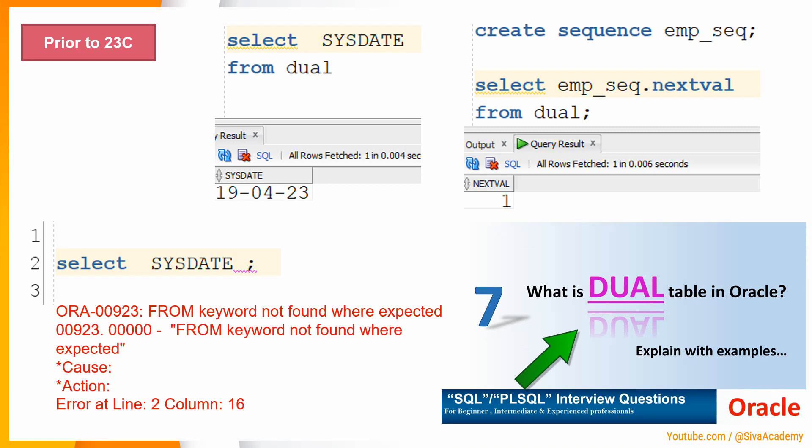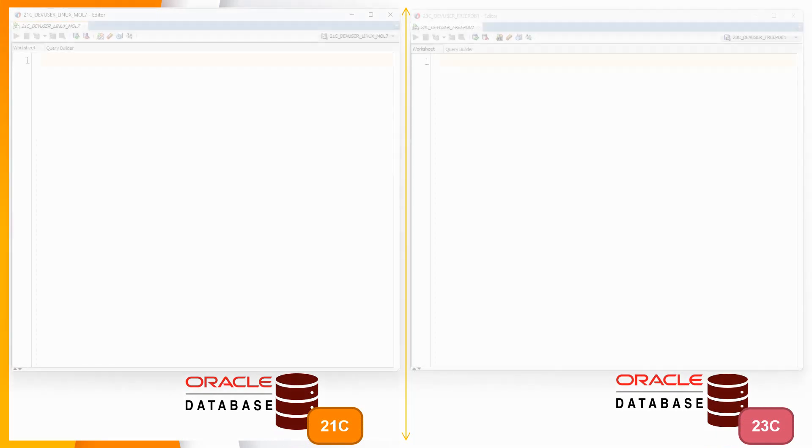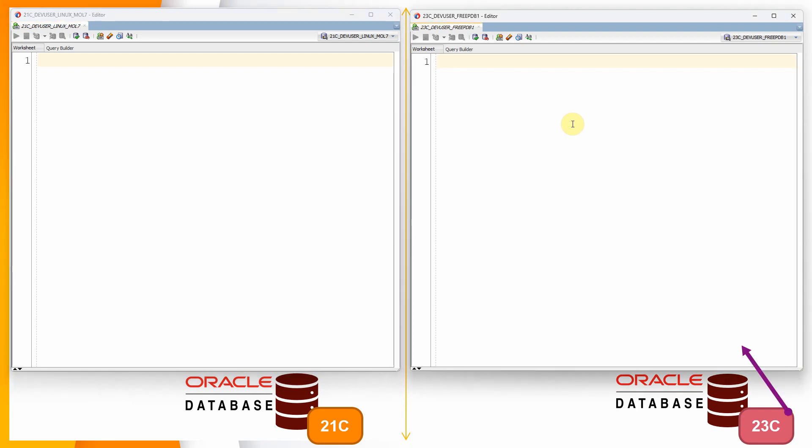Now let us jump into the examples. We are going to connect to two different databases — Oracle 21c and Oracle 23c — so we can understand the difference in behavior of the SELECT statement. On the right side of the window I have connected to Oracle 23c, and on the left side I have connected to Oracle 21c.